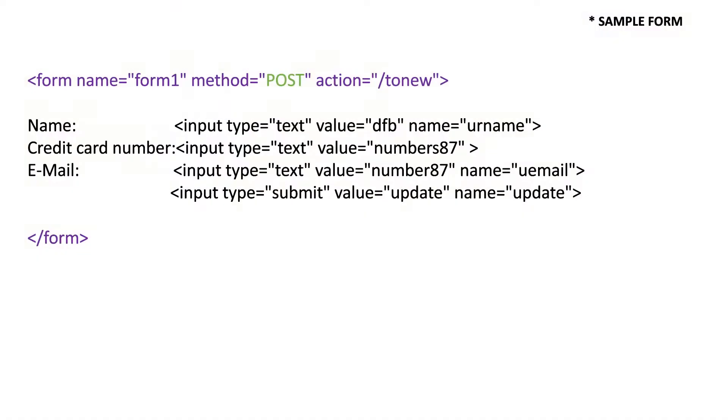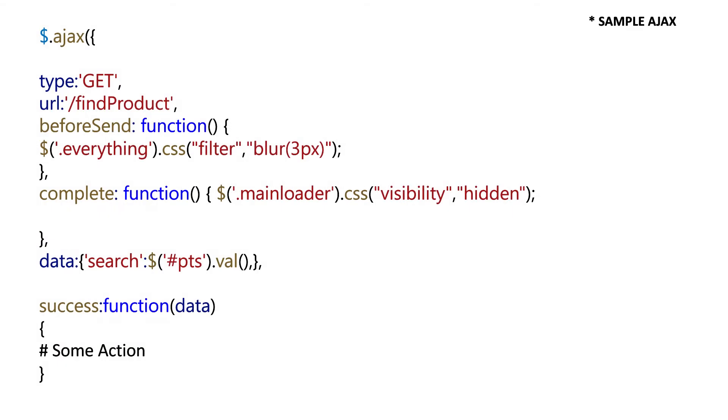Another question that arises is how these HTTP methods are defined or where exactly these are written in a website. Generally, whenever there is a form in a website, you will see some method defined — most of the time it will be the POST method. Similarly, whenever you are making any AJAX request, the HTTP request method is also defined there. So it totally depends on how that website is designed or in simpler terms how the coding has been done for that particular website.